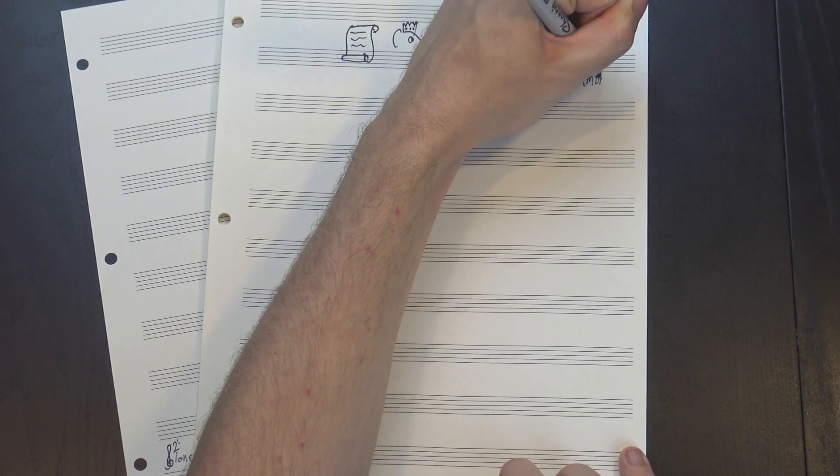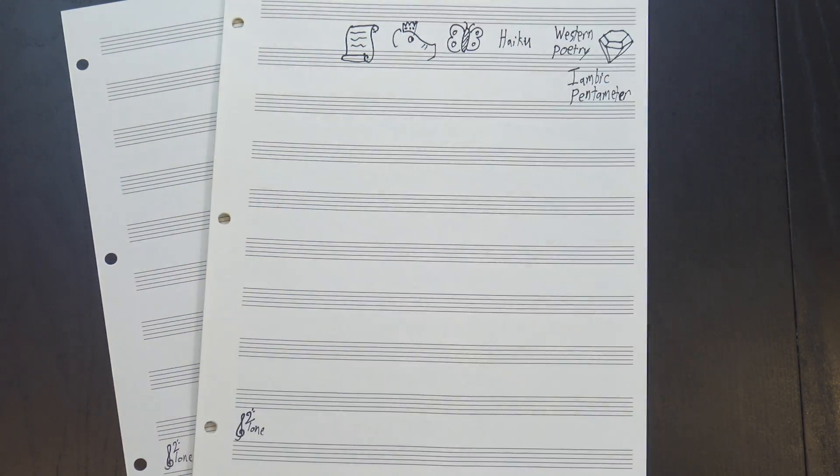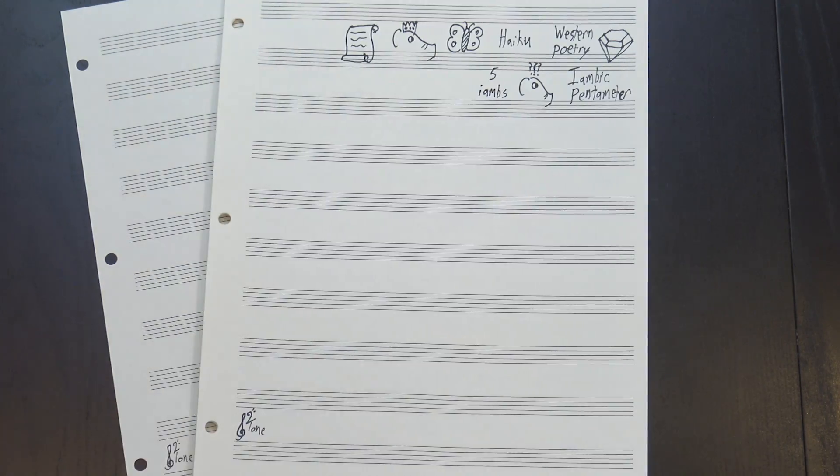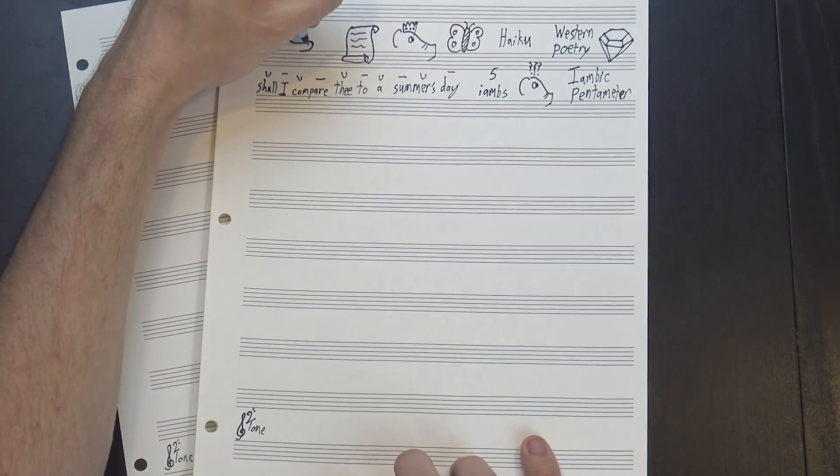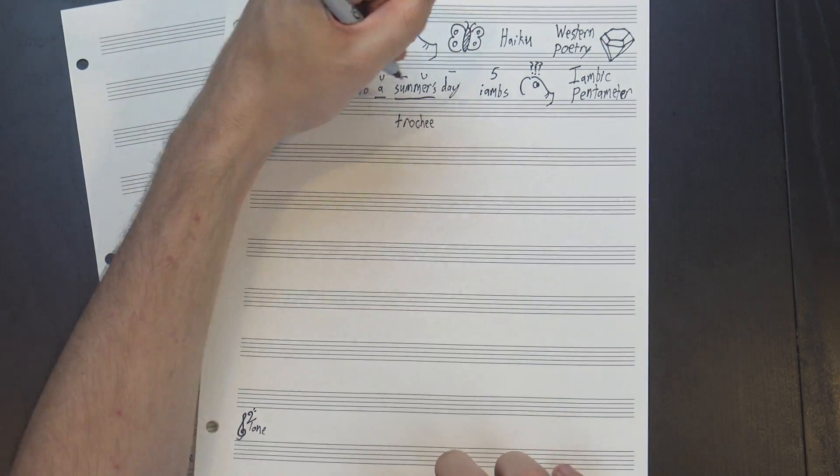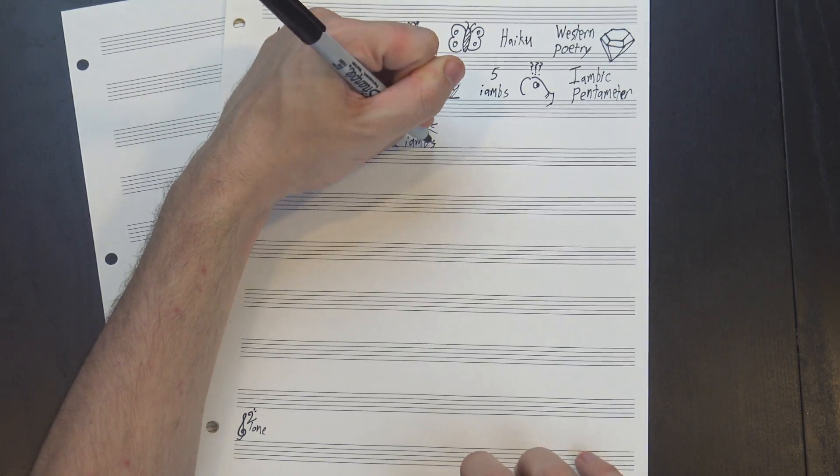Most English-language sonnets are written in what's called iambic pentameter, which sounds scary but actually just means that each line is made up of five iambs, like, shall I compare thee to a summer's day? Notice that sometimes the foot can stretch across words, so even though summer is a trochee, it combines with a and day to form two iambs instead.